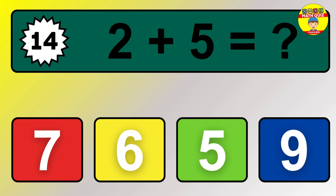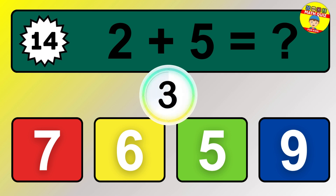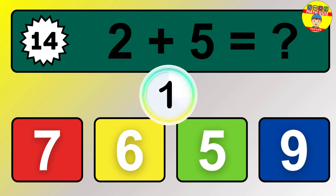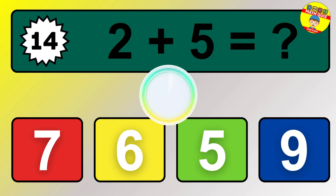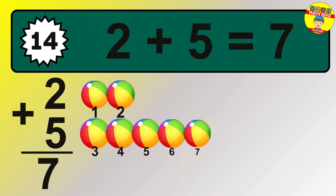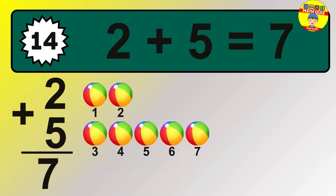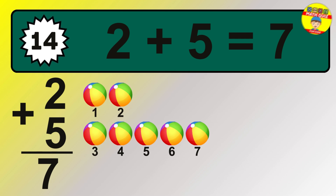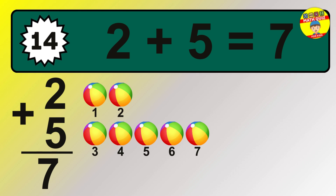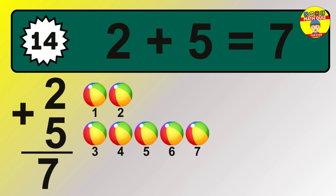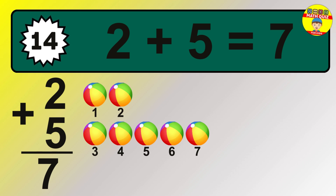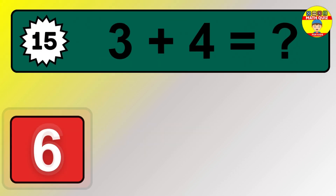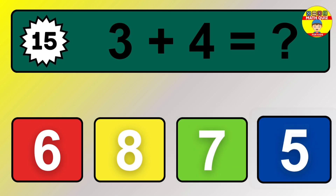Question 14. 2 plus 5 equals what? So the answer is 2 plus 5 is 7. Let's count it. 1, 2, 3, 4, 5, 6, 7.